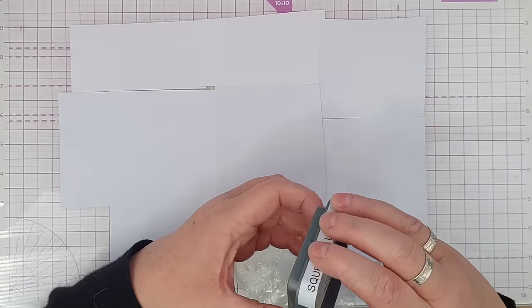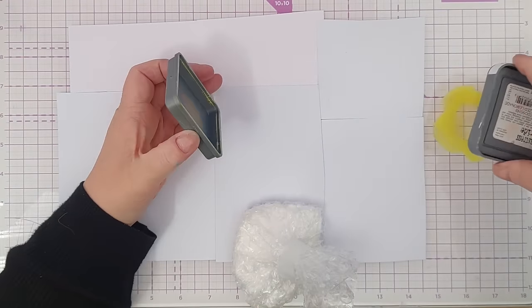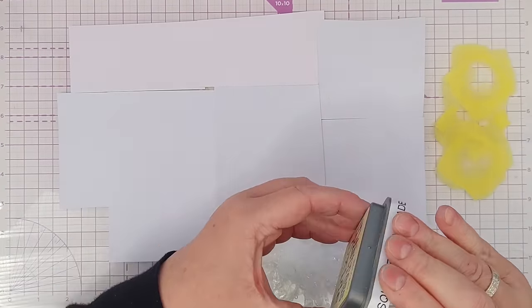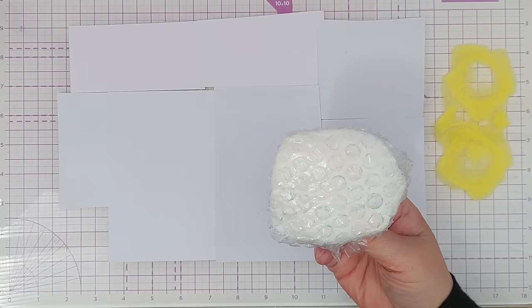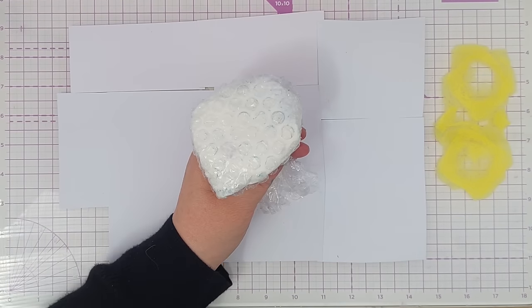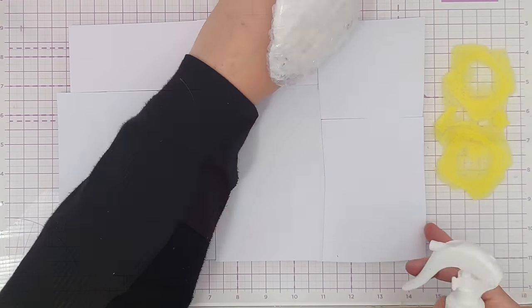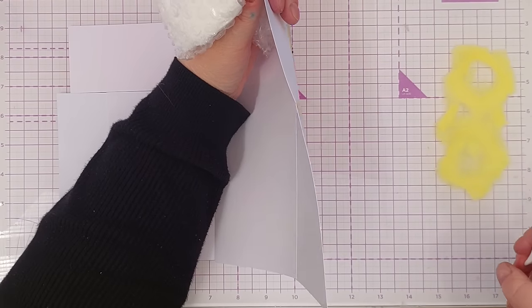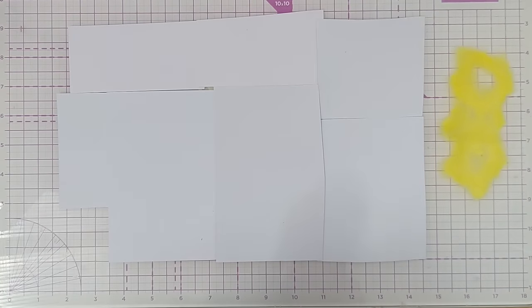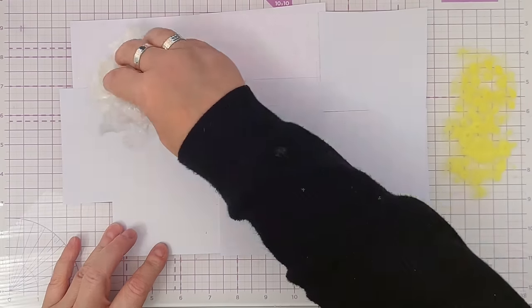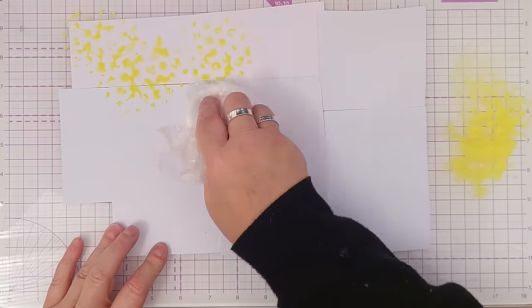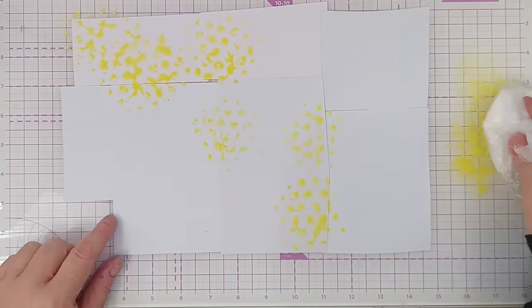We're going to do some more smushing today. I've got squeeze lemonade here. But instead of my regular smusher I'm using my bubble wrap smusher. I just need to make sure that's clean. I'll squirt some water on my distress oxide and then pick up the color with my bubble wrap smusher.